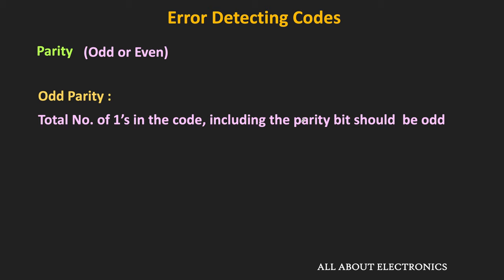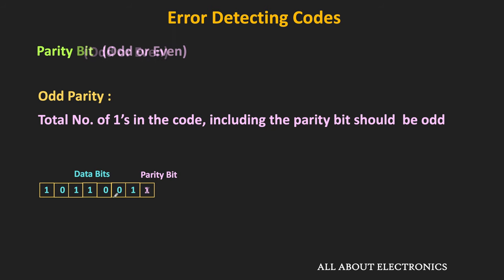For example, let's say there are 7 data bits and 1 parity bit. In case of odd parity, the parity bit should be such that the total number of 1s in the code is odd. Here, as you can see, the total number of 1s in these data bits is equal to 4. That means this parity bit should be equal to 1, so that the total number of 1s in this code remains odd. In another example, the total number of 1s in the data bits is equal to 5, so this parity bit should be equal to 0, so that the total number of 1s in the code remains odd.